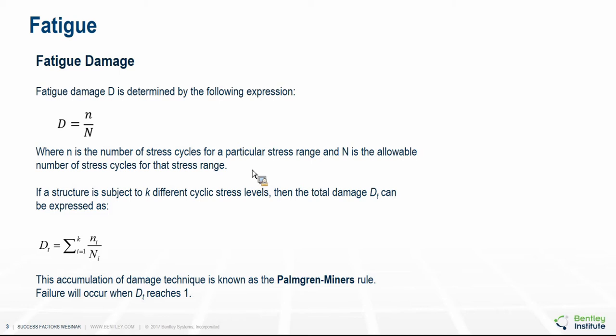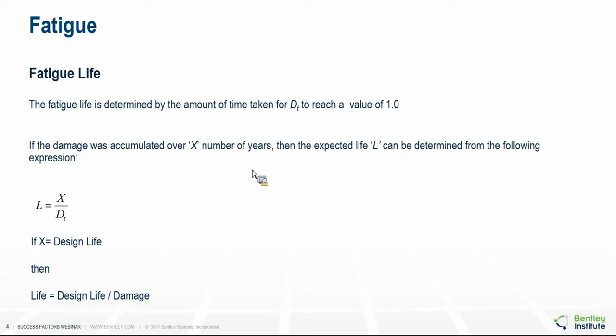Fatigue failure is assumed to occur when the total damage reaches one. The fatigue life is determined by the time taken for the total damage to reach 1.0. If the fatigue life is calculated over X number of years, the life can be determined by X divided by the total damage. For an offshore structure, the life can be expressed by the design life divided by the total damage over that period.